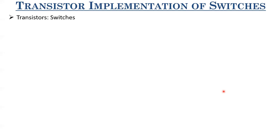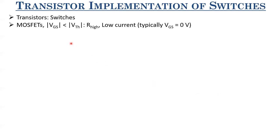MOSFETs have been discussed in the discussion sessions and the first tutorial. As long as the gate-to-source voltage magnitude is less than the threshold voltage magnitude — talking in terms of magnitudes to generalize for both NMOS and PMOS — whenever you have |VGS| less than |VTH|, the MOSFET's resistance is pretty high. For a switch, we need two discrete resistance levels: very high when off, and very low when on.